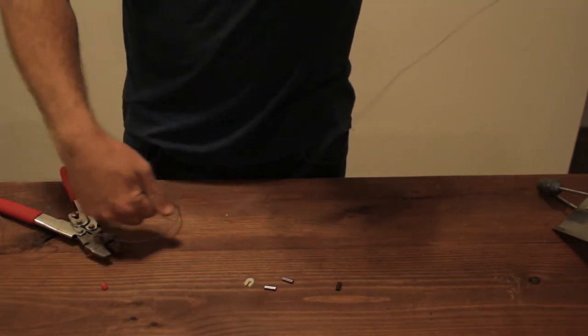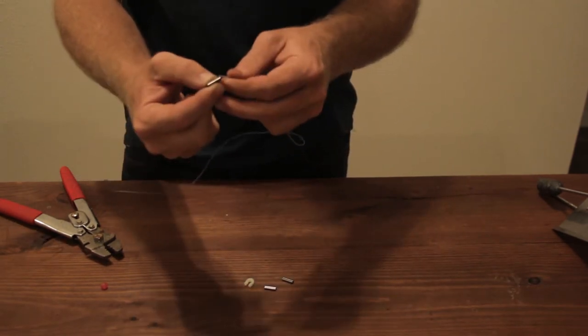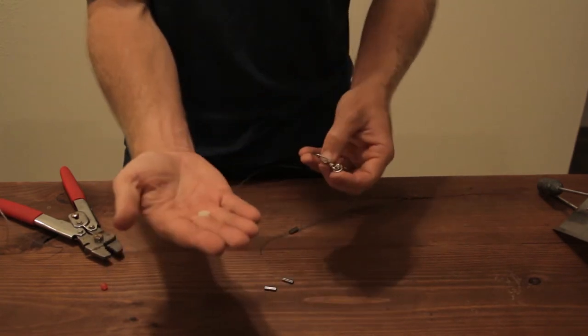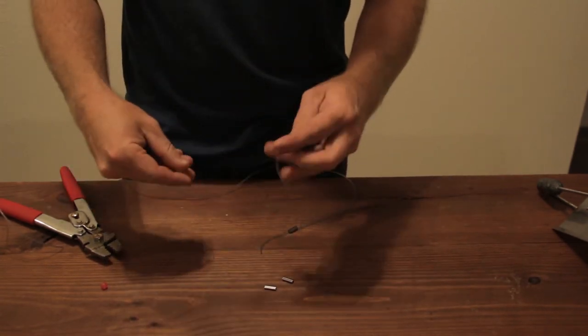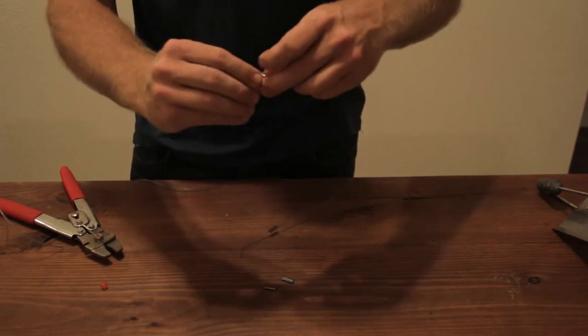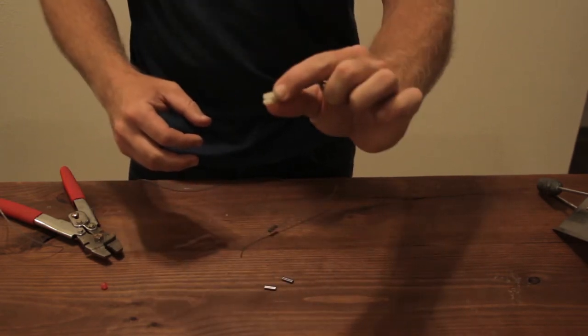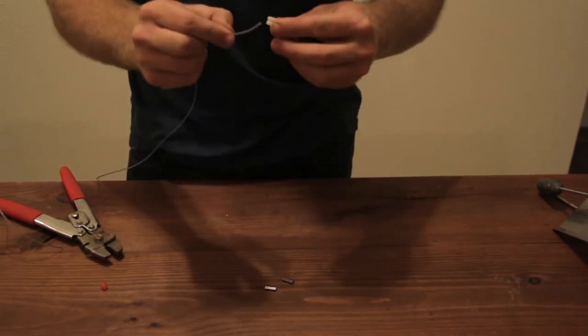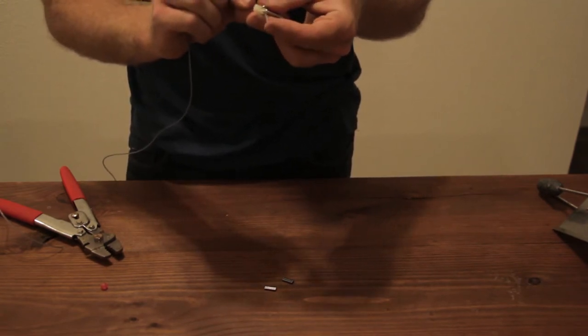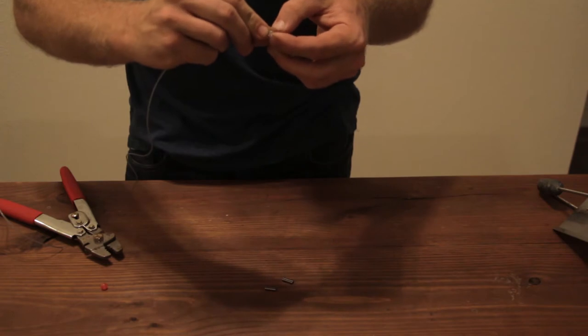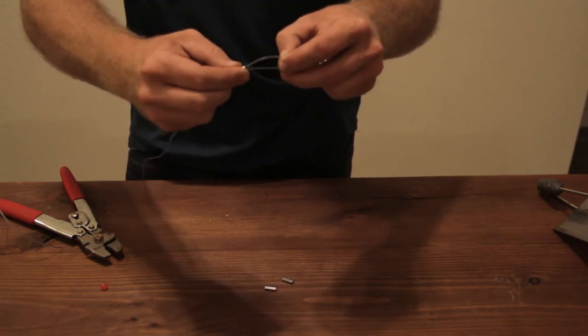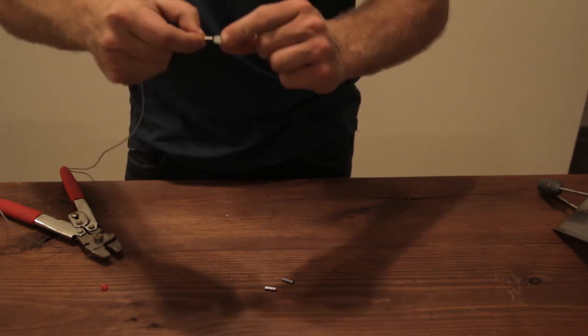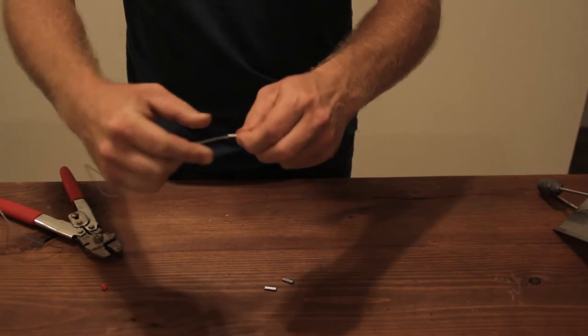Take a crimp, put it through, then you're going to take your plastic thimble, you're going to put it through the snap swivel just like that, go ahead and put it through, then you're going to take your line, go through the same loop, and then go back through the crimp, get it nice and tight, and then crimp it down.